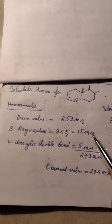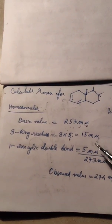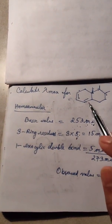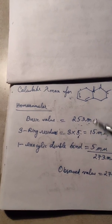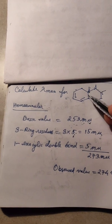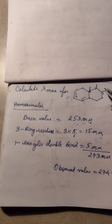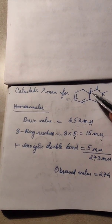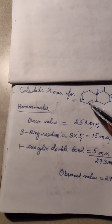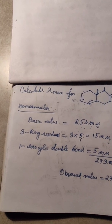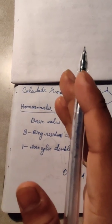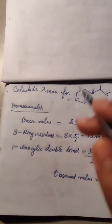Next, proceeding to the third step: we have one exocyclic double bond. Exocyclic double bond means, considering this structure we have seen, this is the exocyclic double bond - outside the ring, how many double bonds are present in the cyclic structure?